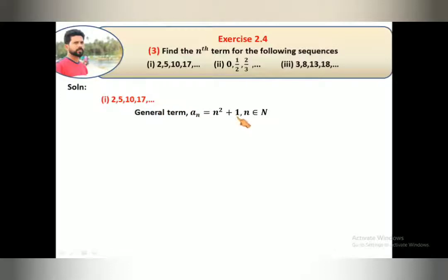Add 1 plus 1 is 2. Then 2 squared is 4 plus 1 is 5, that's the second term. 3 is 3 squared plus 1, 3 squared is 10. 4 is 4 squared plus 1, that is 17.